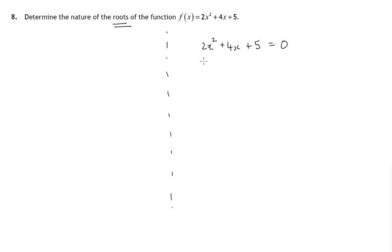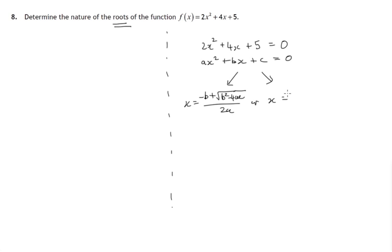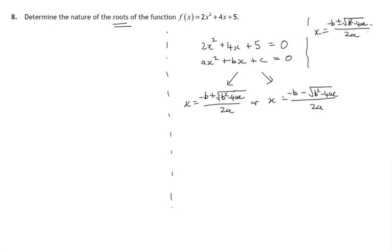To solve quadratic equations, we know there's a formula that tells us the solutions of any quadratic equation. x equals negative b plus the square root of b squared minus 4ac, all over 2a — that's one solution. The other solution is negative b minus the square root of b squared minus 4ac, all over 2a. So there are two possibilities: adding or subtracting the square root of b squared minus 4ac.